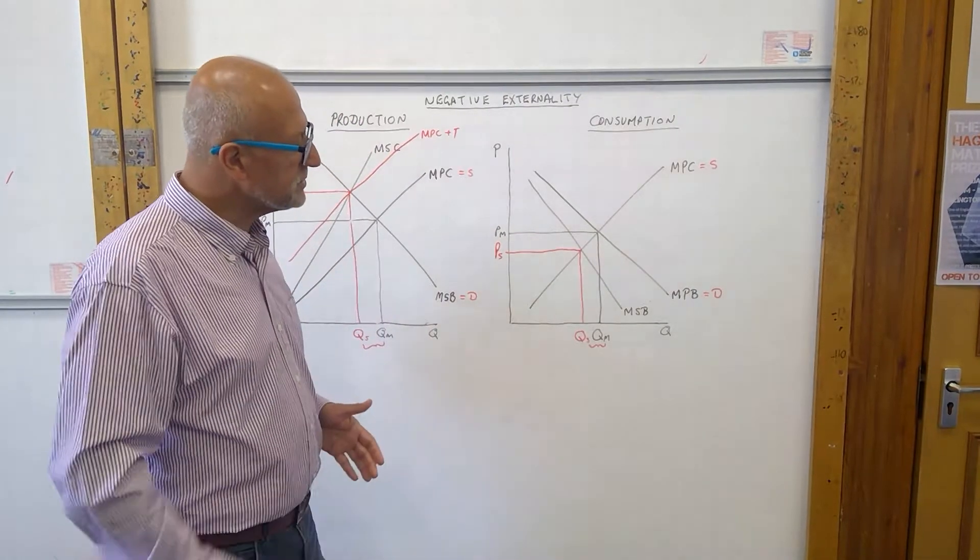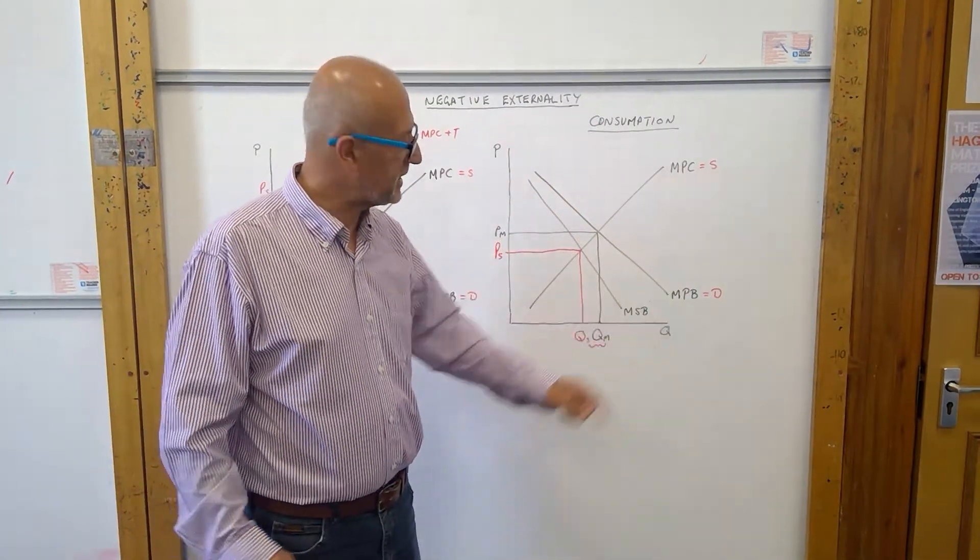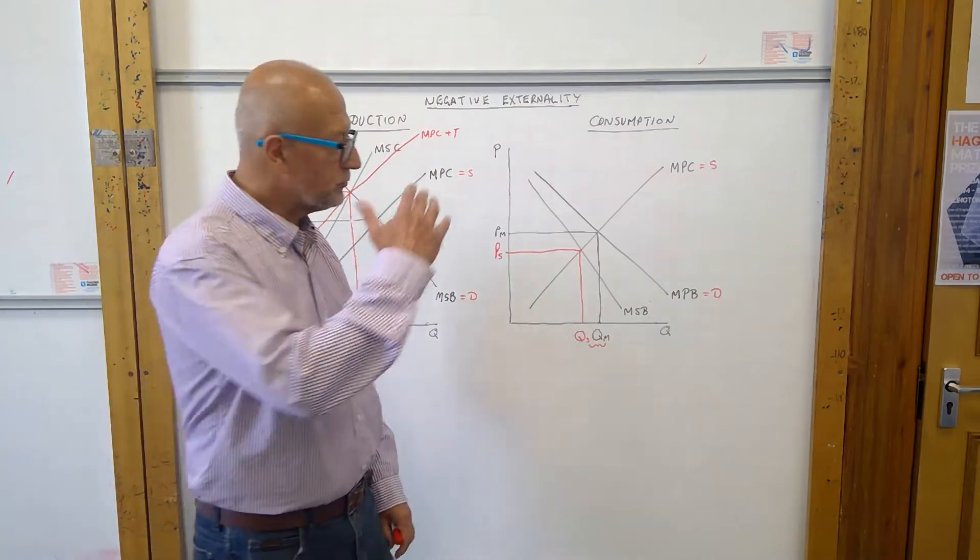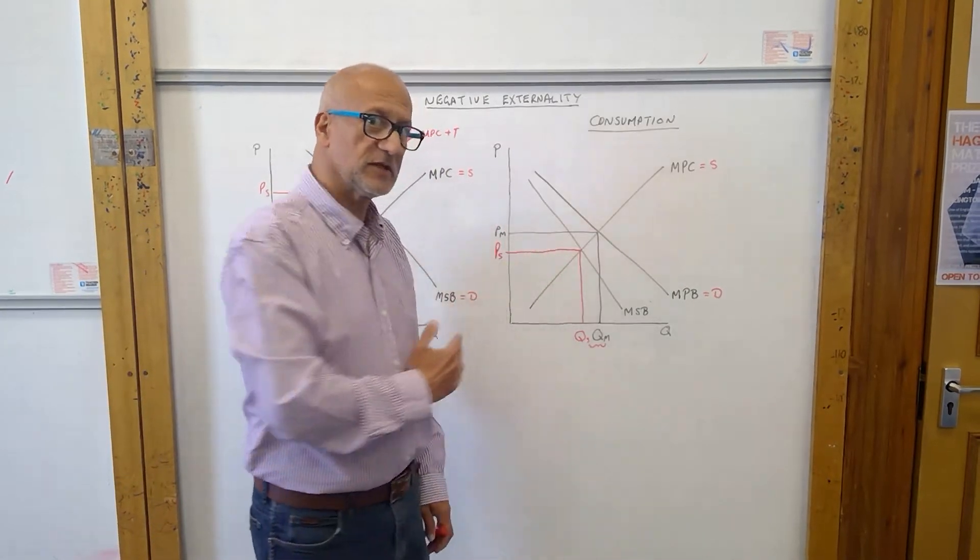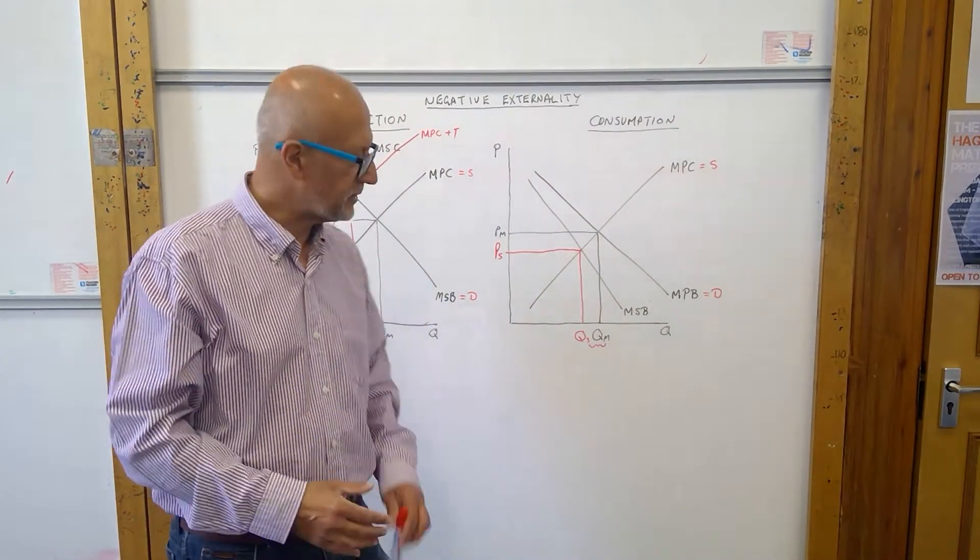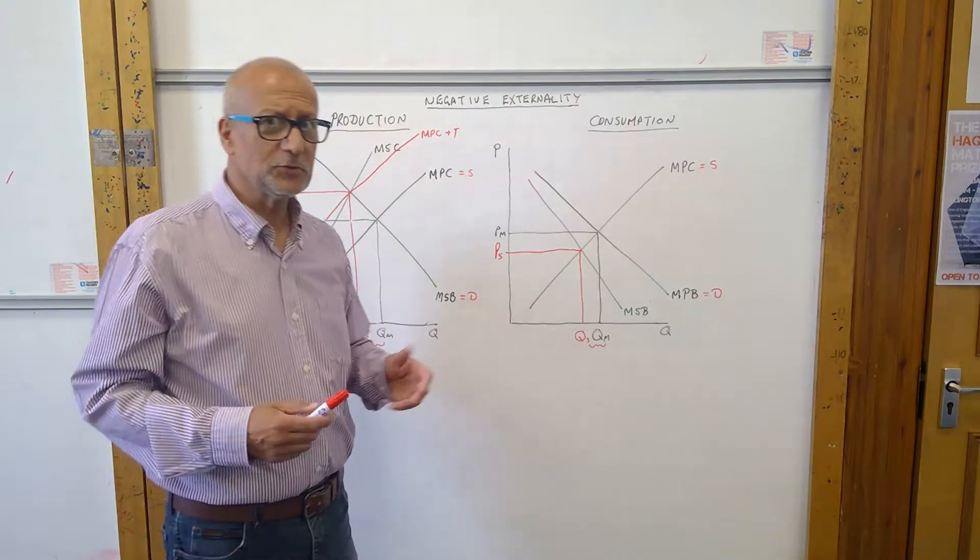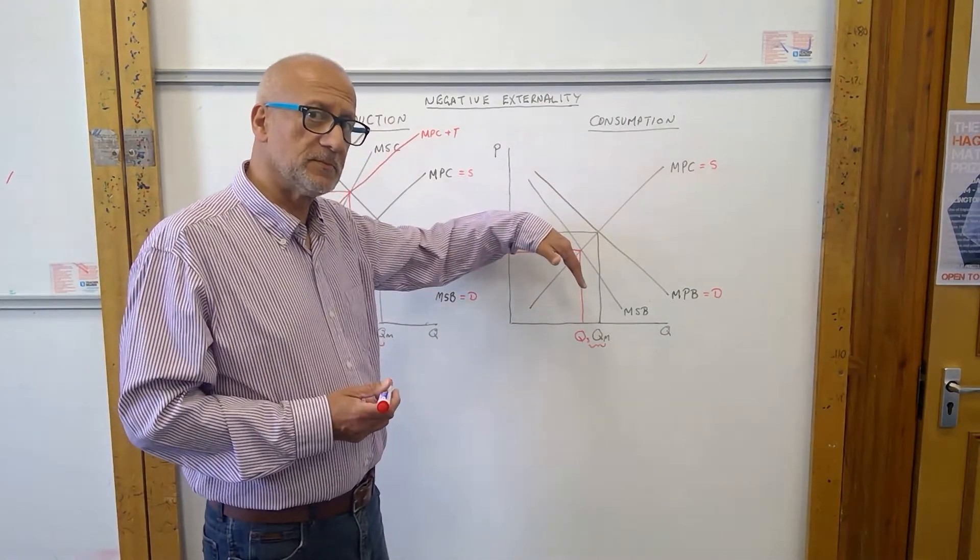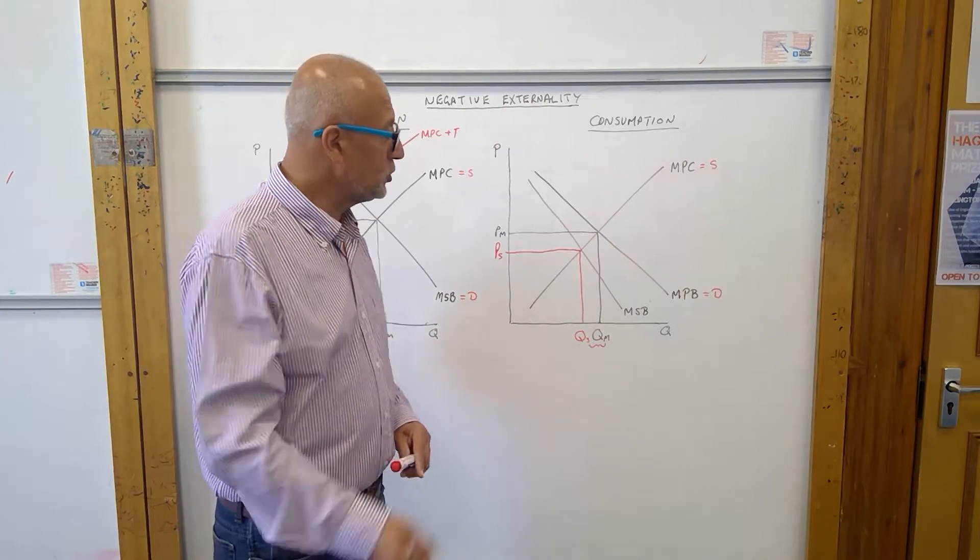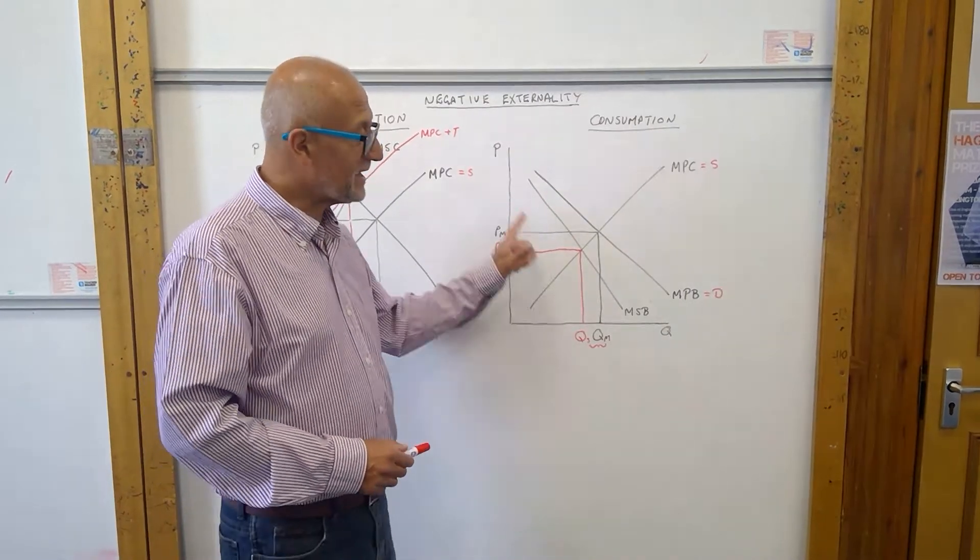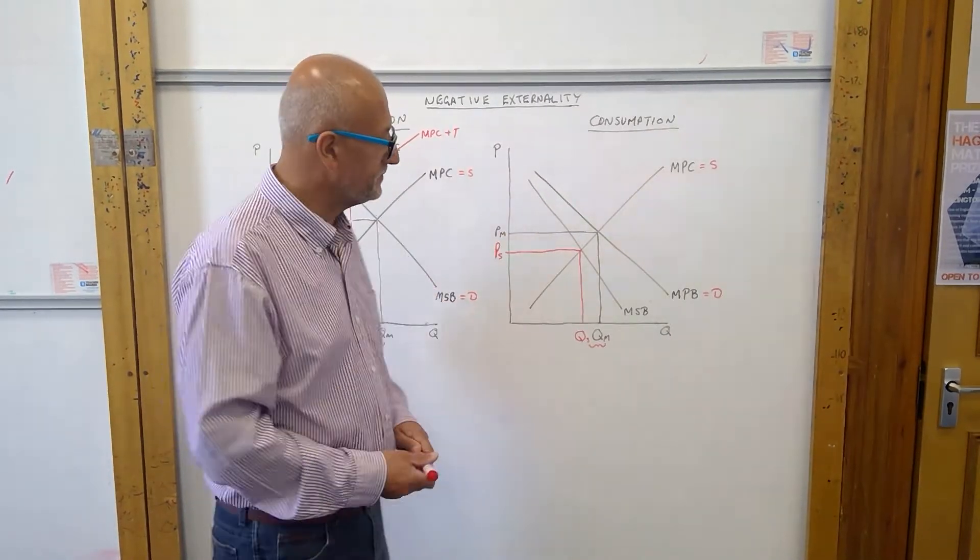And if we change the behavior of the consumers here, what we'll do is we'll result in the demand curve shifting inwards. Reduce the demand for it. If we can do that effectively, we may be able to reduce the demand sufficient to intersect with the marginal social benefit.